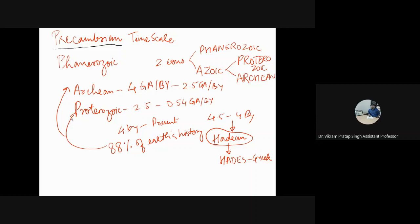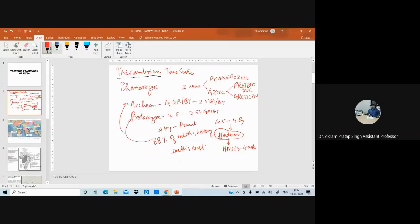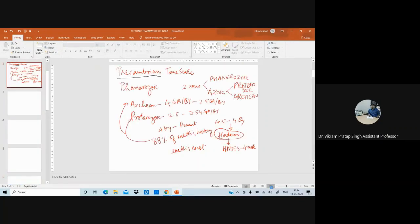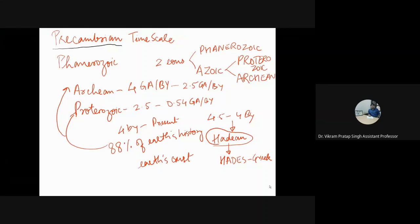This time period is important because it was during this time the Earth's crust was being formed. The Pre-Cambrian time period spans from 4 to 2.5 billion years for the Archean, and after 0.5 billion years it starts the Cambrian.